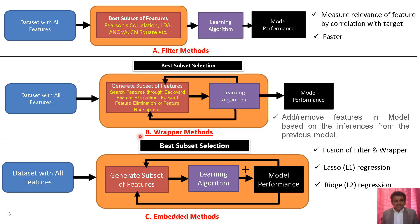The next type of feature selection is the wrapper method. In the wrapper method, we start with a dataset with all features, then generate a subset of features. Features are selected through backward feature elimination, forward elimination, and feature ranking — different types of methods.